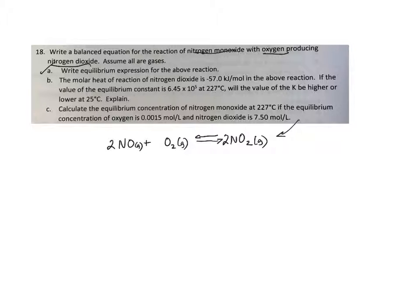B, the molar heat of reaction is negative 57 kilojoules for that reaction. So if I want to include energy in the reaction, because they say it's negative, that means it's exothermic, so I should write it on this side of the equation.